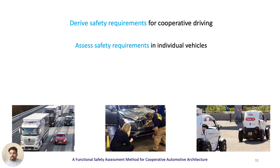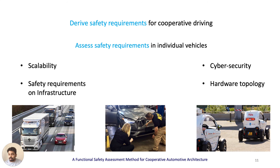In summary, this paper tackles two challenges with respect to architecture and safety in the context of cooperative driving: one, deriving and allocating safety requirements for the functional architecture of cooperative driving systems; and two, checking the assessment of these requirements in the final system architecture. We applied our method to a cooperative driving use case on a real-life prototype, and the results showed the efficacy of our method. However, this is not a silver bullet. The scalability of our approach and the verification of safety requirements on infrastructure like traffic lights, and related domains like cybersecurity and hardware topology, need further research.